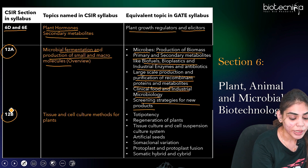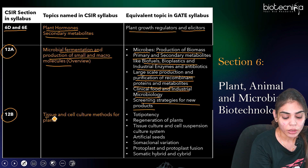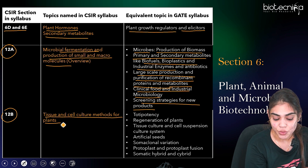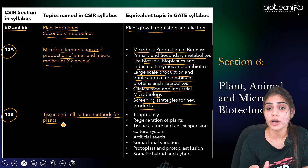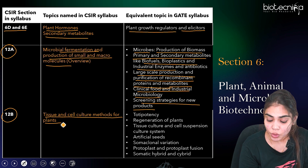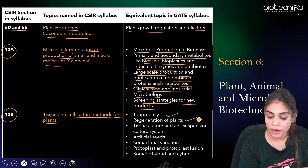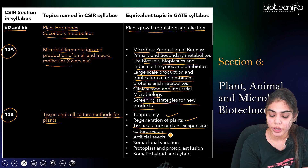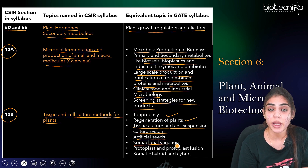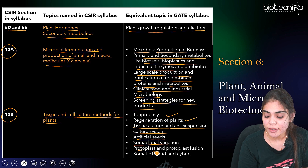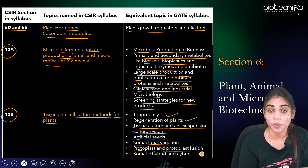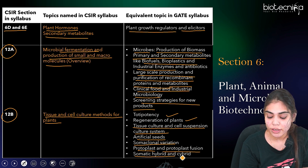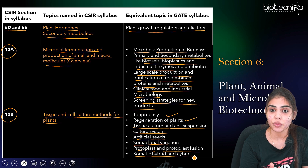For 12B, which includes tissue and cell culture methods for plants, you have to focus on all these topics in detail under GATE: totipotency, regeneration of plants, tissue culture methods, cell suspension culture systems, artificial seeds, somaclonal variation, protoplast and protoplast fusion, as well as somatic hybrid and cybrid formation.